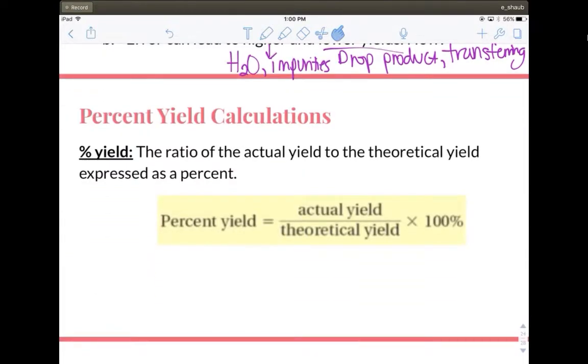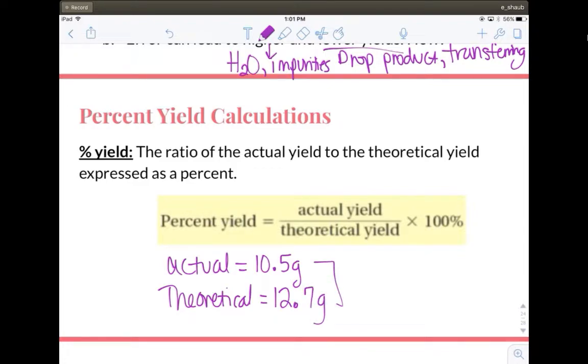The way we calculate percent yield is we take the actual over the theoretical times a hundred. So if we were just doing let's say my actual yield was 10.5 grams and theoretically in a reaction I was supposed to make let's say 12.7 grams. Plugging those two values in it should not seem difficult mathematically. We just divide those two values multiplied by a hundred and we would see that we would have an 82.68 percent yield. So if I give you the actual and theoretical it's as simple as just dividing those two values.